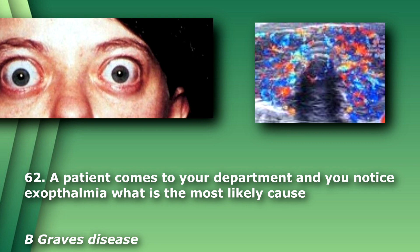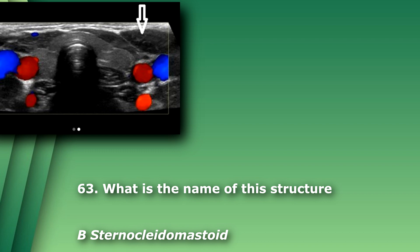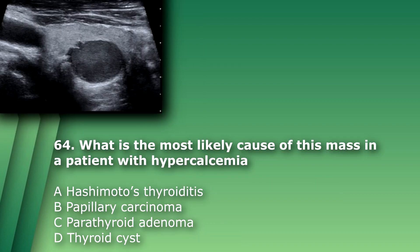Graves disease is an autoimmune disorder that causes hyperthyroidism. The thyroid usually appears enlarged, heterogeneous, and with increased vascularity — called thyroid inferno. Early on, the thyroid can be normal in appearance. Question 63: What is the name of this structure? A) pectoralis, B) sternocleidomastoid, C) orbicularis oris, D) trapezius. The answer is B, sternocleidomastoid.